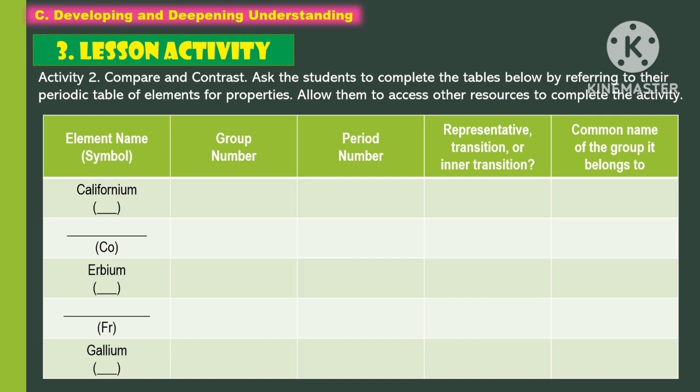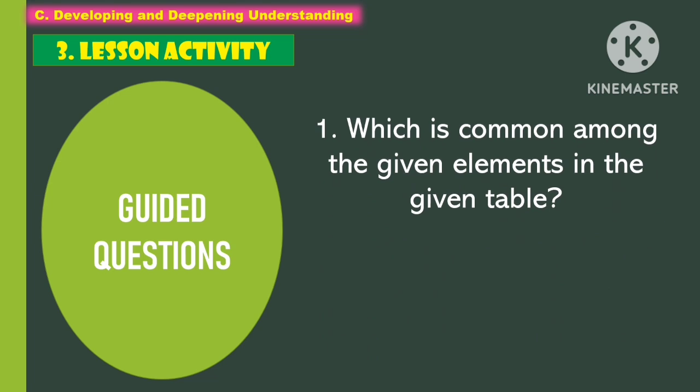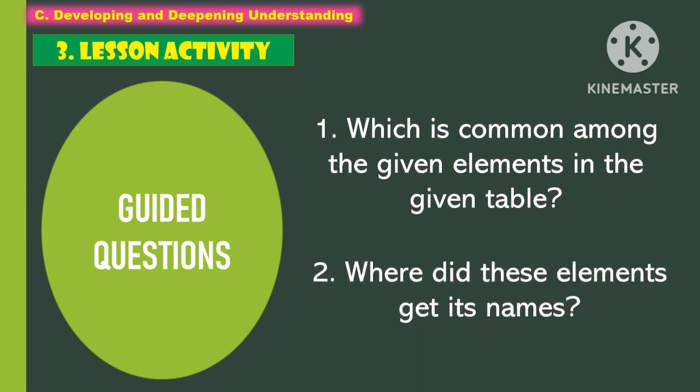For the lesson activity — compare and contrast — ask the students to complete the tables below by referring to their periodic table of elements for properties. Allow them to access other resources to complete the activity. After the students answer the table, proceed to the following guide questions. Question 1: What is common among the given elements in the table? Question 2: Where did these elements get their names?